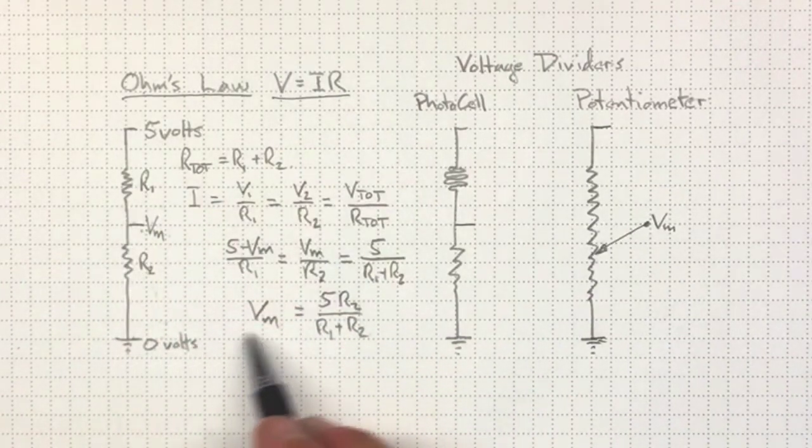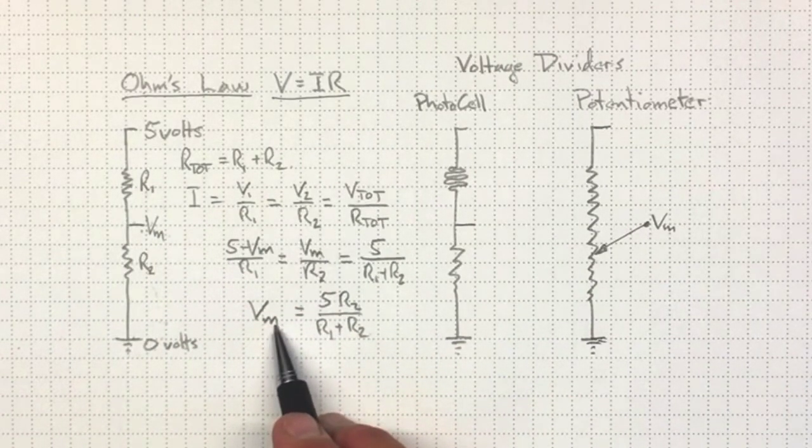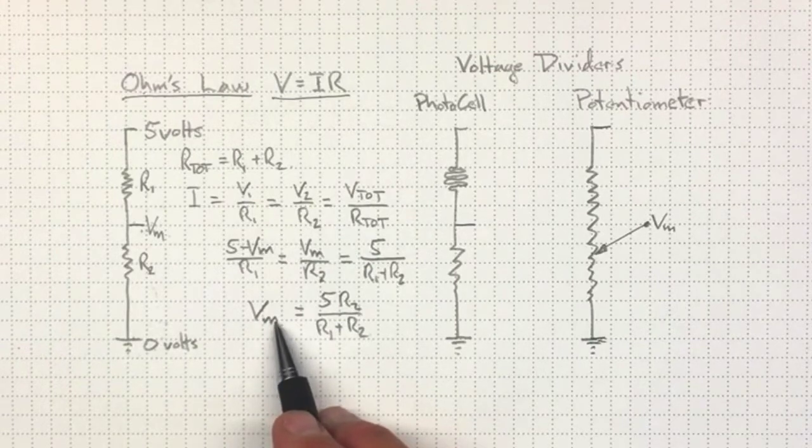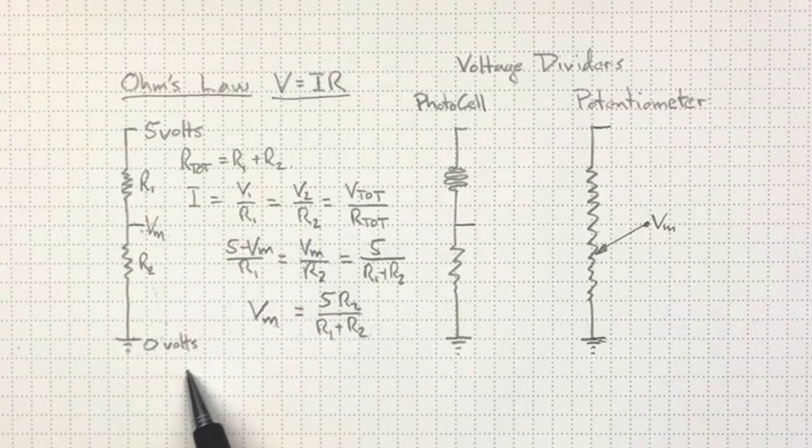So if we knew the resistances, we could find out the measured voltage. Or we could invert this, and if we knew the measured voltage, we could find out the resistances.